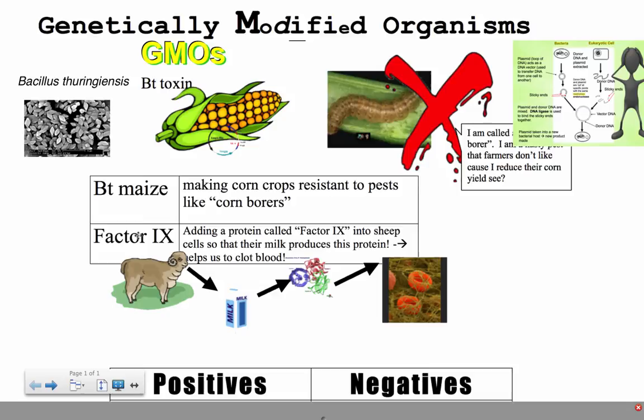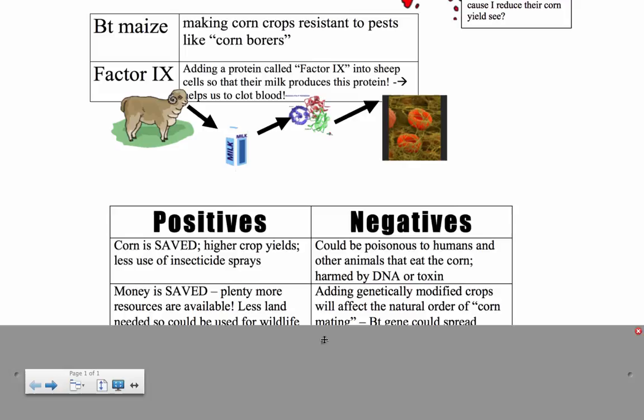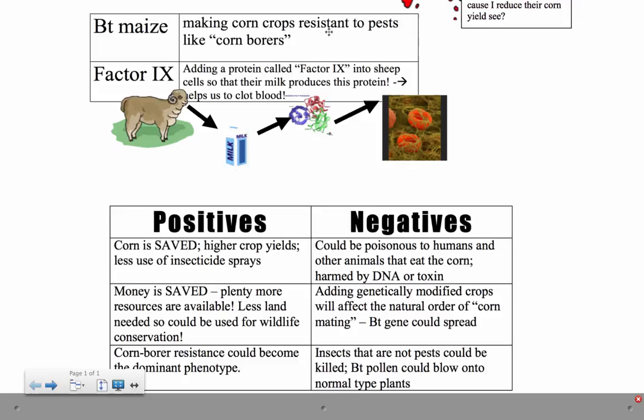Let's look at some positives and negatives about using BT maize specifically. Obviously, you can save corn and get higher crop yields. There's also less use of insecticide sprays because the BT toxin is already acting like a built-in insecticide in the corn — you don't have to apply extra spray insecticides onto the actual corn crops.